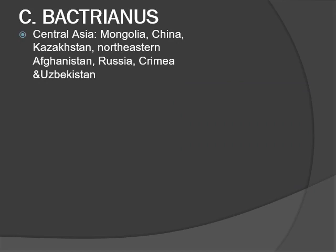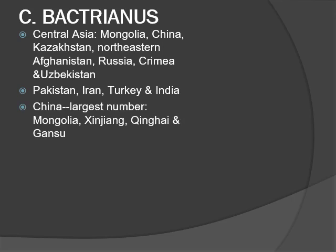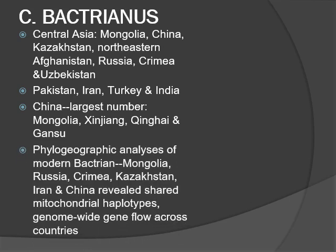Bactrian camels are distributed mainly in Central Asian countries including Mongolia, China, Kazakhstan, northeastern Afghanistan, Russia, Crimea, and Uzbekistan. A few populations can also be found in Pakistan, Iran, Turkey, and India. China harbors the largest number of domestic Bactrian camels, located mainly in Inner Mongolia, Xinjiang, Qinghai, and Gansu. Phylogeographic analysis of modern Bactrian camels from Mongolia, Russia, Crimea, Kazakhstan, Iran, and China revealed shared mitochondrial haplotypes as well as genome-wide gene flow across countries.